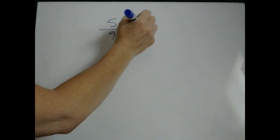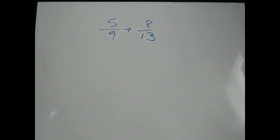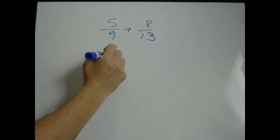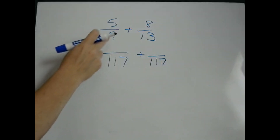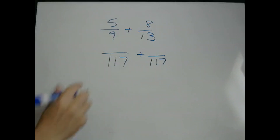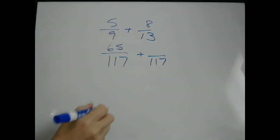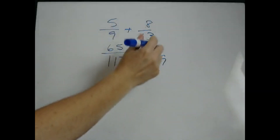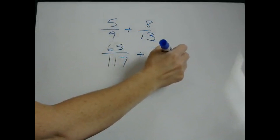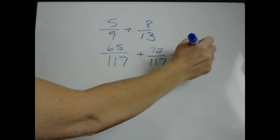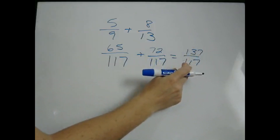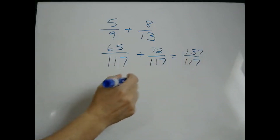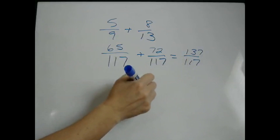Let's do another one: 5 ninths plus 8 thirteenths. Again, we need to find a common denominator. We're just going to multiply 9 times 13, which is 117. Since we multiplied 9 by 13, we have to multiply 5 times 13, so we get 65. Since we multiplied 13 by 9, we have to multiply 8 times 9, which gives us 72. We end up with an answer of 137 over 117. This is already in reduced terms, so we just need to make it into a mixed number: 1 and 20 over 117.